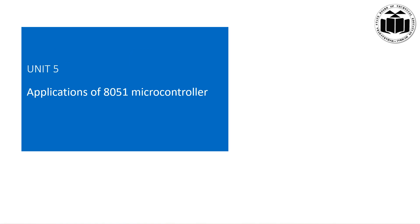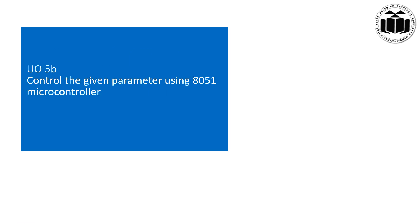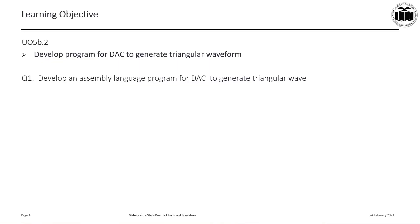Unit 5 is applications of 8051 microcontroller, and the unit outcome is to control the given parameter using the 8051 microcontroller. The learning objective of this presentation is to develop a program for DAC to generate a triangular waveform. At the end of this presentation, you will be able to develop an assembly language program for DAC to generate a triangular wave.